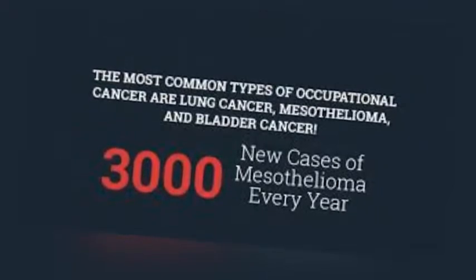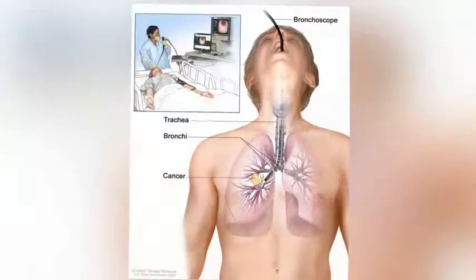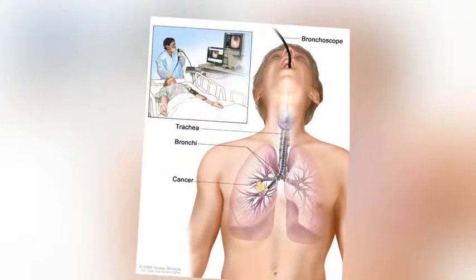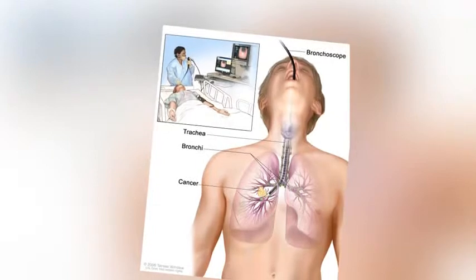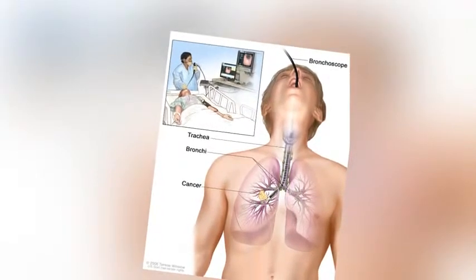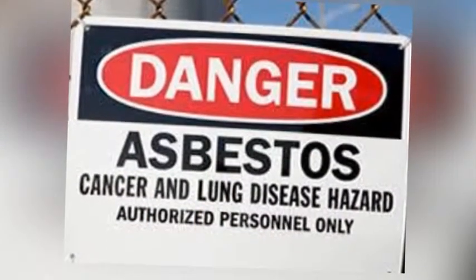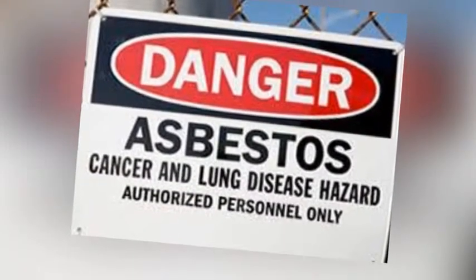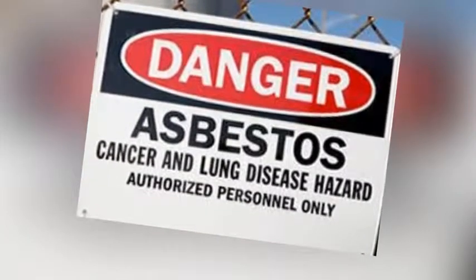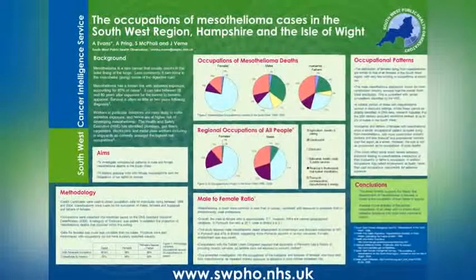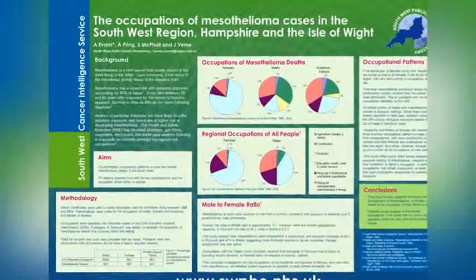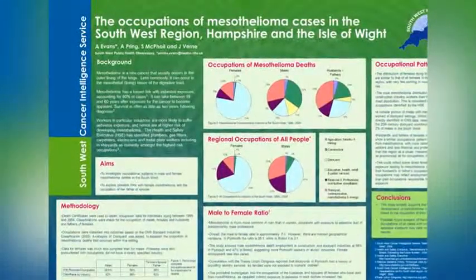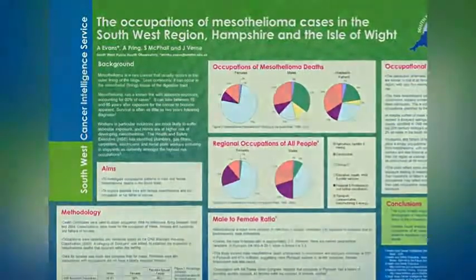Asbestos has been widely used in many industrial products, including cement, brake linings, gaskets, roof shingles, flooring products, textiles, and insulation. Commercial asbestos mining at Wittenoom, Western Australia, took place from 1937 to 1966. The first case of mesothelioma in the town occurred in 1960. The second case was in 1969, and new cases began to appear more frequently thereafter. The lag time between initial exposure to asbestos and development of the disease can be significant.